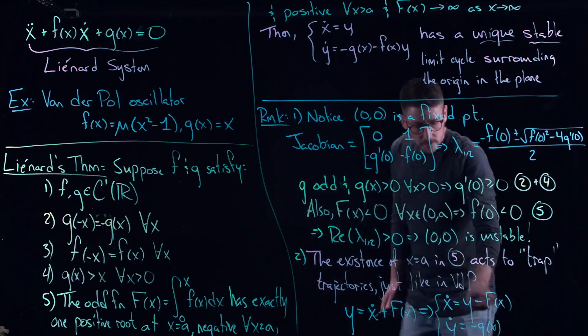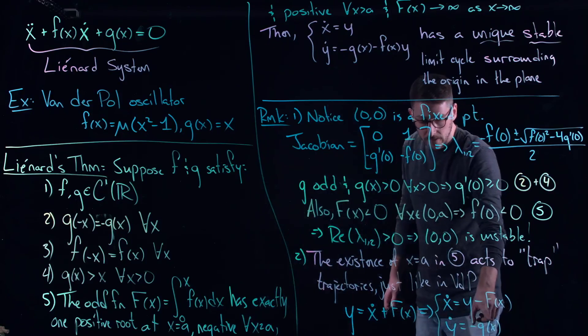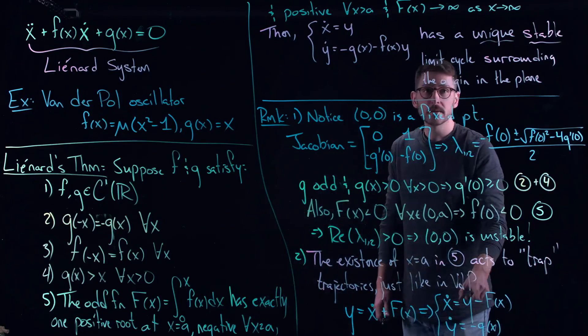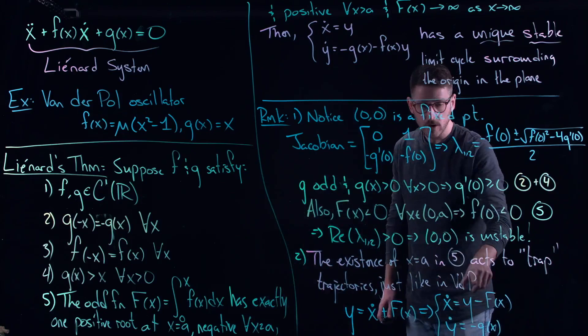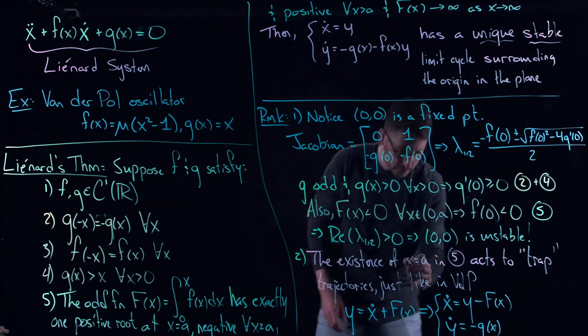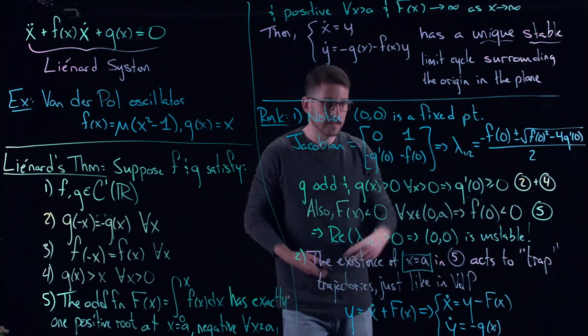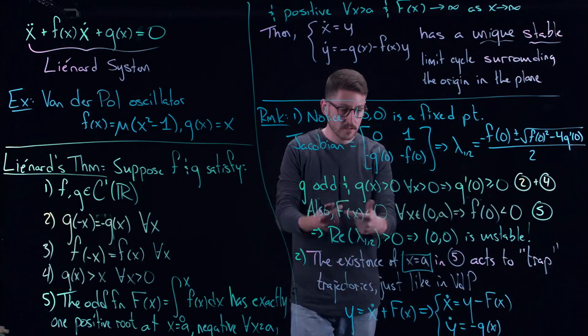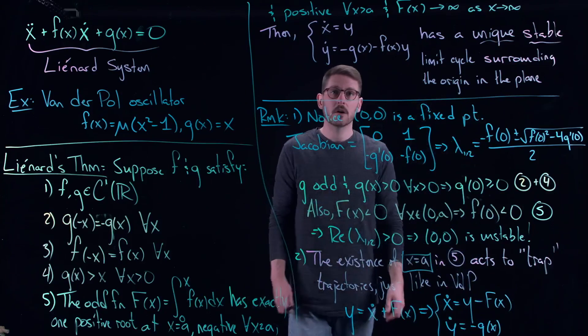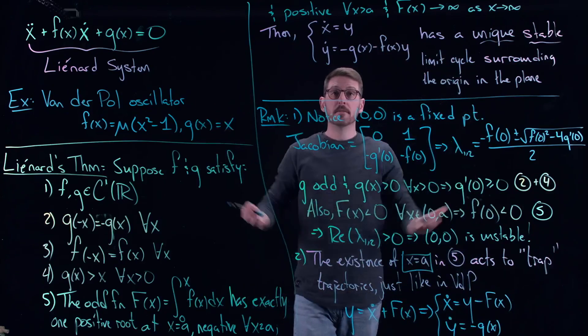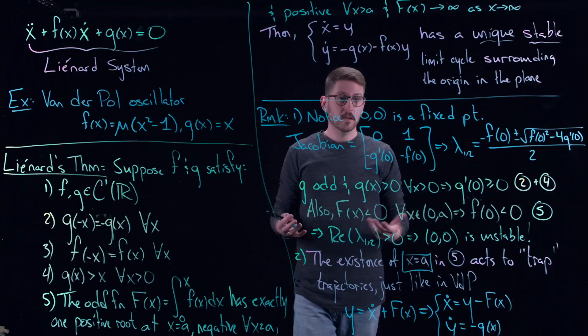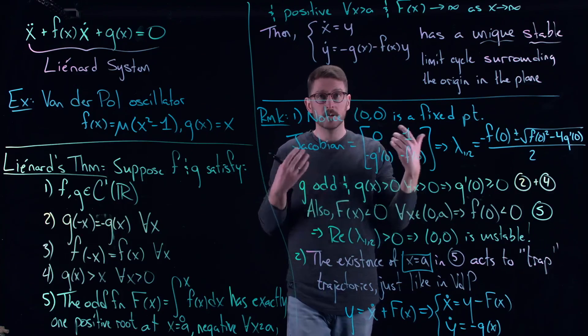And what this actually gives you is that ẋ is equal to y - F(x), just rearrange this equation, and ẏ is equal to -g(x). And when you look at the system in that way then you will be able to show that there's a trapping region just by the existence of this x equal to a. It tells you that x has to eventually start decreasing and so you can build a trapping region here in order to make your unique stable limit cycle.